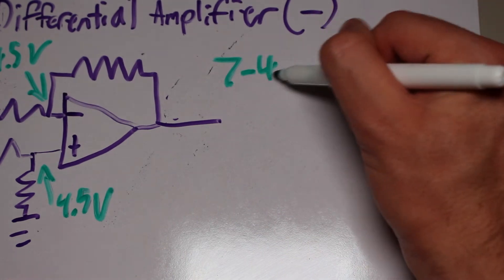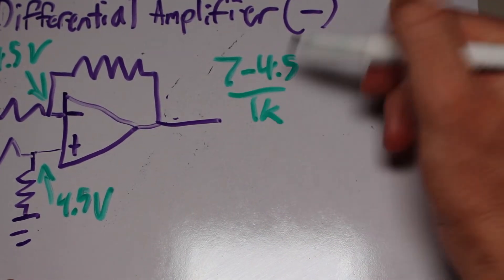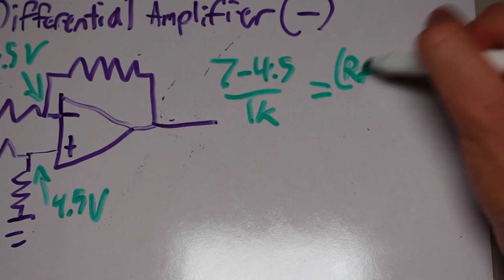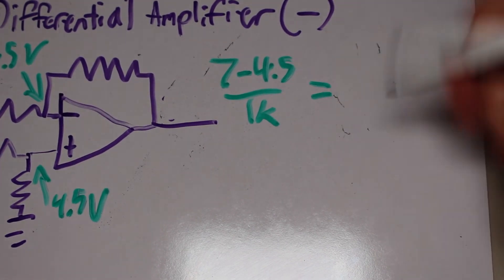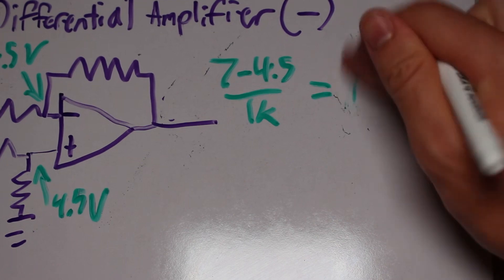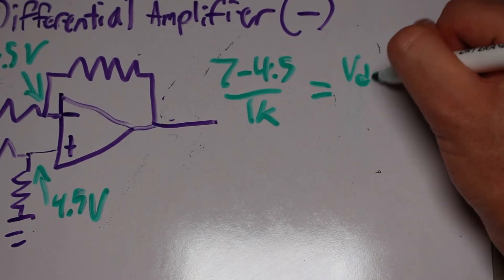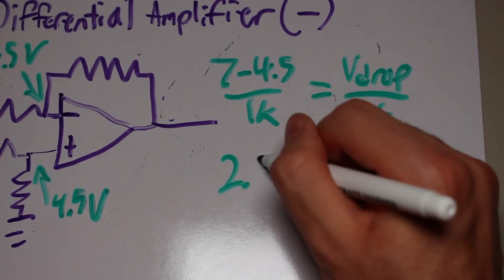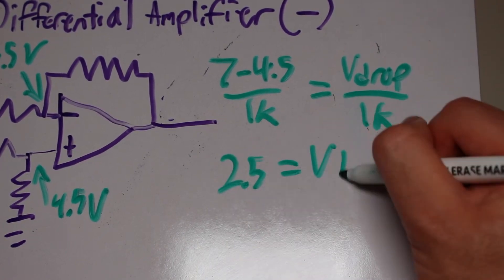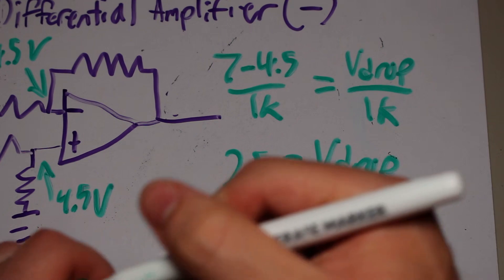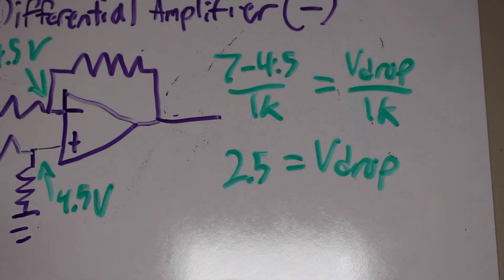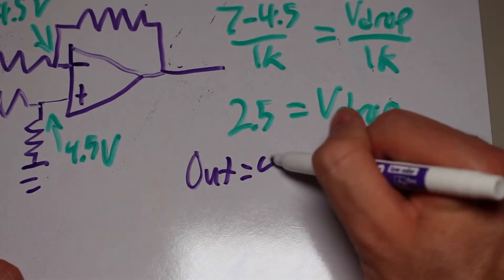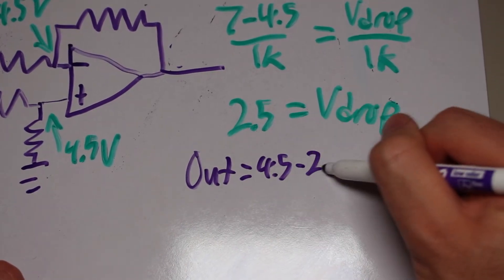The non-inverting input will be 9 volts, and the inverting input will be 7 volts. The non-inverting input has a voltage divider, so its voltage will be 4.5 volts. Now, since the inputs must match, the inverting input will also be 4.5 volts. That means there will be a 2.5 volts drop, creating 2.5 milliamps of current. The output will match this in the same way, and drop that same 2.5 volts across the resistor, leaving only 2 volts in the output. That math checks out, 9 minus 7 is indeed 2.